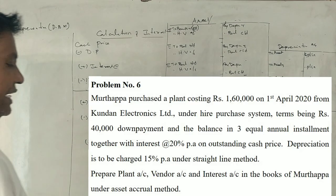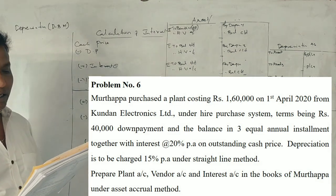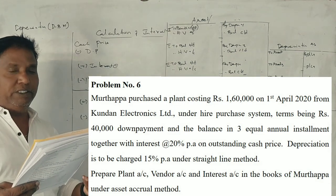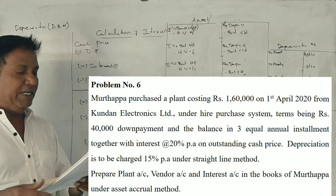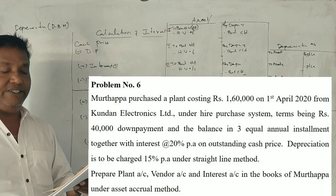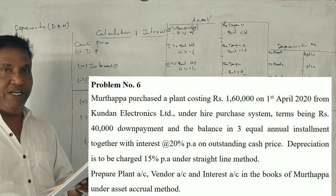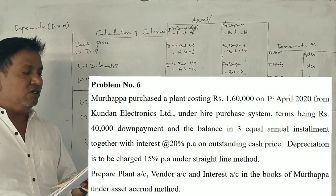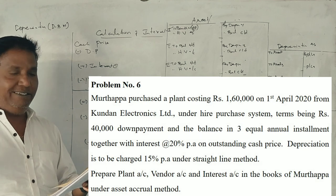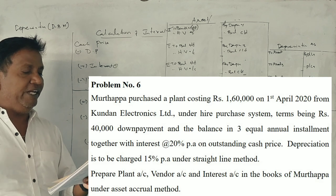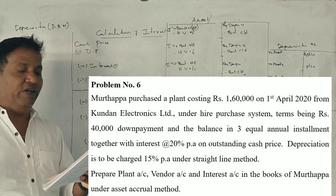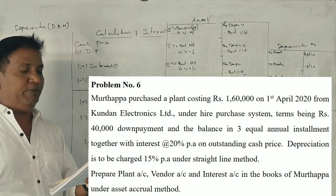This is from the 2022 question paper. Problem No. 6: Murthappa purchased a plant costing Rs. 1,60,000 on 1st of April 2020 from Kundan Electronics Limited under hire purchase system. The terms being 40,000 down payment, balance in three equal annual installments together with interest at 20% per annum on outstanding cash price.